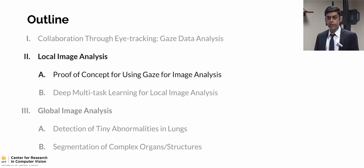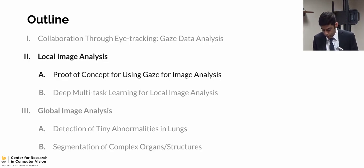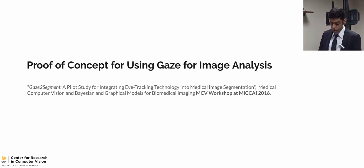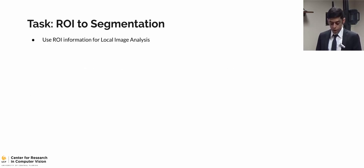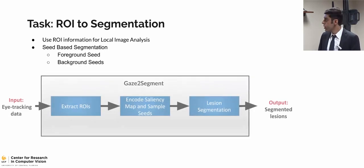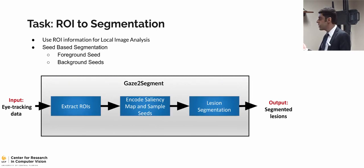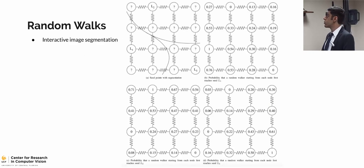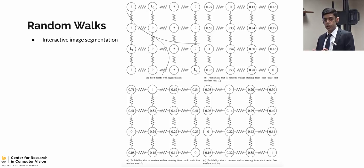First, I'll go into the local image analysis with a proof of concept, published in MCB workshop at MICCAI 2016. Given an ROI, how do we convert it to a segmentation of the local image? Seed-based segmentation is one approach. For that, we need to carefully choose foreground and background seeds. We propose using image saliency to refine and find the seed maps, and then use region segmentation based on a seed-based approach. For the seed-based approach, we use random box segmentation — an interactive seed-based method assigning a probability to each pixel based on predefined labels.